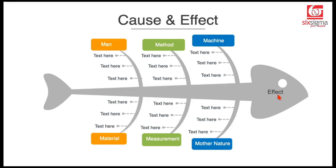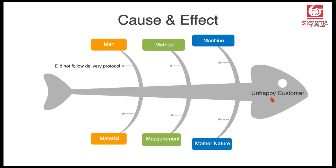Let's list causes under each of these categories — I'll do one cause under each category, but you can always do multiple causes. So let's say the customer is unhappy. It could be because the delivery person did not follow the protocol. Let's say the delivery person was supposed to leave the package at your doorstep and step behind, but the delivery person actually left the package with the security, didn't reach your doorstep, didn't try to contact you. That's a man issue.